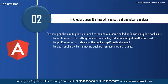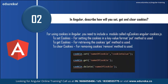Next: in Angular, describe how you will set, GET, and CLEAR cookies. For using cookies in Angular, you need to include an Angular module called ngCookies — that is angularCookies.js. For setting cookies in key-value format, the PUT method is used. For retrieving cookies, the GET method is used. For removing cookies, the REMOVE method is used. You can follow the code procedure shown here.